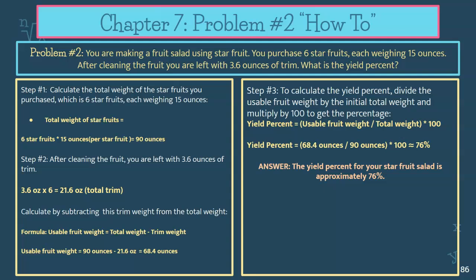Now calculate the usable fruit by subtracting the trim weight from the total weight. Usable fruit equals total weight minus trim: 90 total ounces minus 21.6 ounces of total trim equals 68.4 ounces of usable edible fruit — that is your edible portion quantity (EPQ). Now apply the formula: usable fruit divided by total weight times 100 for the percent. So 68.4 ounces divided by 90 ounces, multiplied by 100, gives you a 76% yield percent for your star fruit salad.